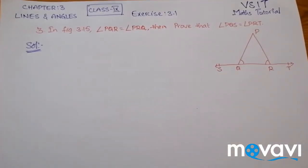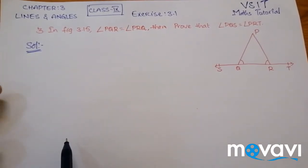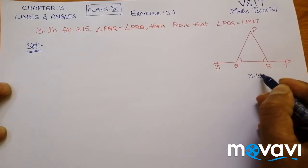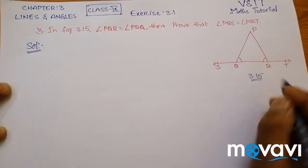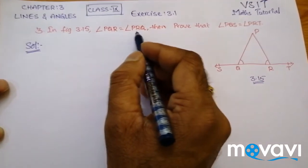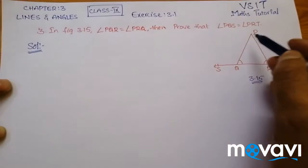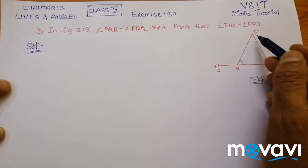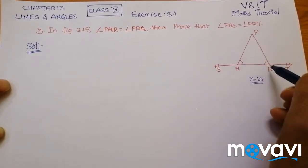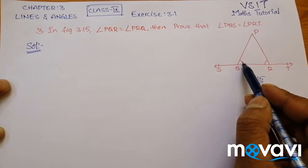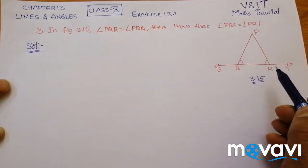The question given here is, in figure 3.15, angle PQR is equal to angle PRQ — that is, this angle is equal to this angle, meaning both these angles are equal.